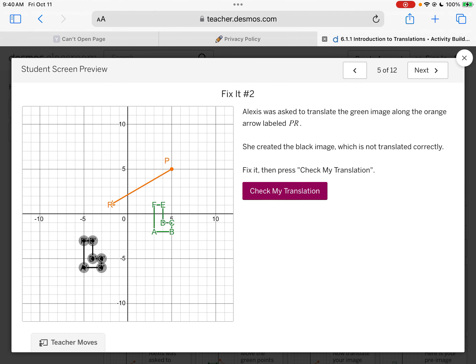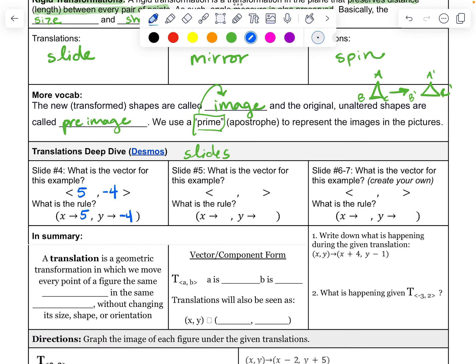My next one, the green image. This is going to be to the left, 1, 2, 3, 4, 5, 6, 7. Left 7. Down 1, 2, 3, 4. So that is going to end up being a negative 7 and a negative 4, which is the rule: x minus 7, y minus 4.